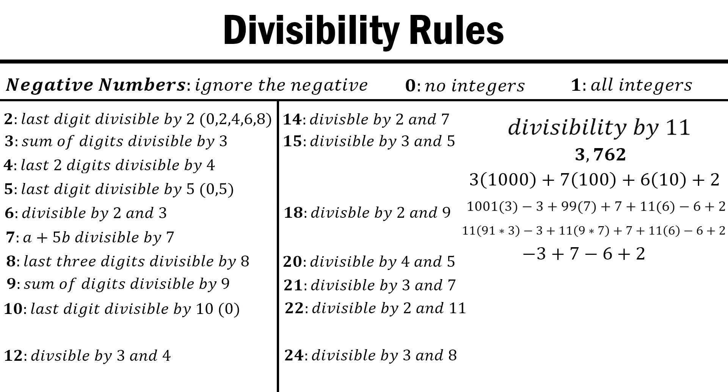This is similar to our rule for 3 and 9, but it alternates between addition and subtraction, which we call an alternating sum. This alternating sum of the digits must be a multiple of 11. In this case, they sum to 0, and since 11 times 0 is equal to 0, the sum is a multiple of 11, and so 11 divides 3762.